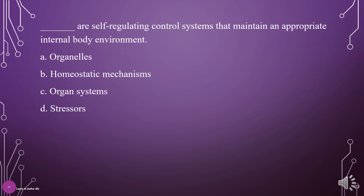What are self-regulating control systems that maintain an appropriate internal body environment? A. Organelles, B. Homeostatic mechanisms, C. Organ systems, D. Stressors. The answer is B: Homeostatic mechanisms.